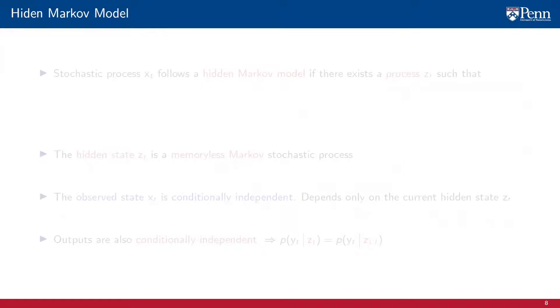This fact brings us to the introduction of hidden Markov models. We say that a stochastic process x follows a hidden Markov model if there exists another unobservable stochastic process z of t that is Markov. And furthermore, the state zt completely determines the probability distribution of the observed state x of t.